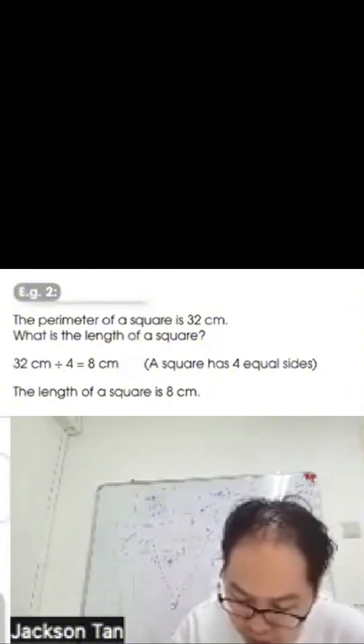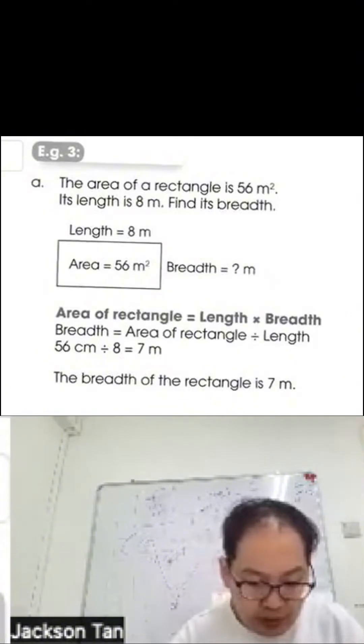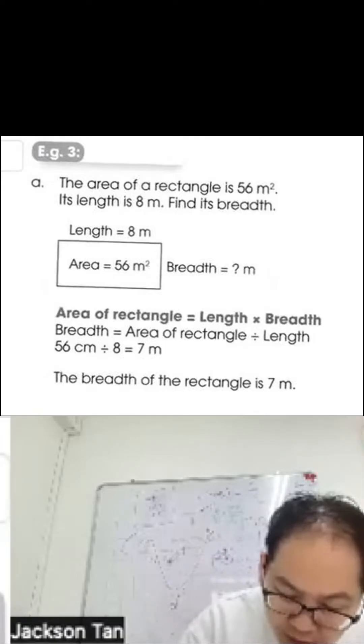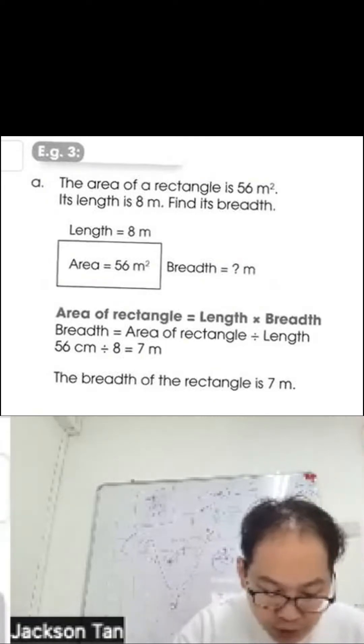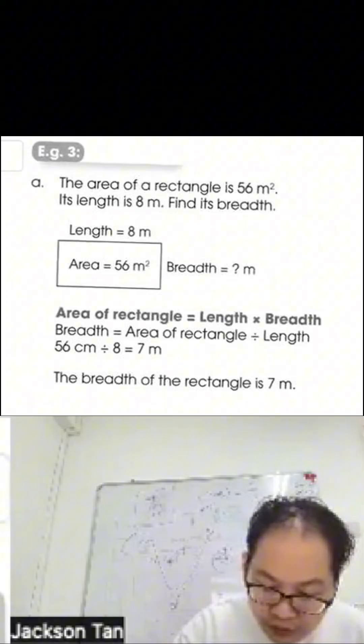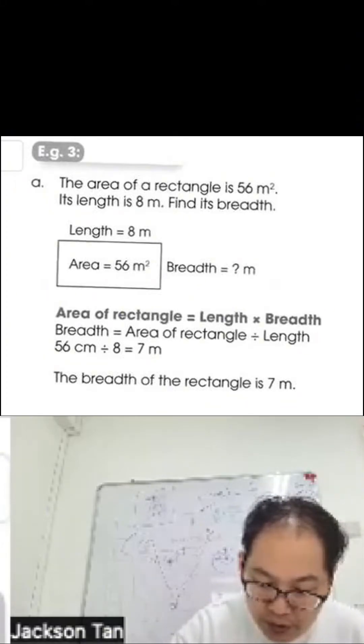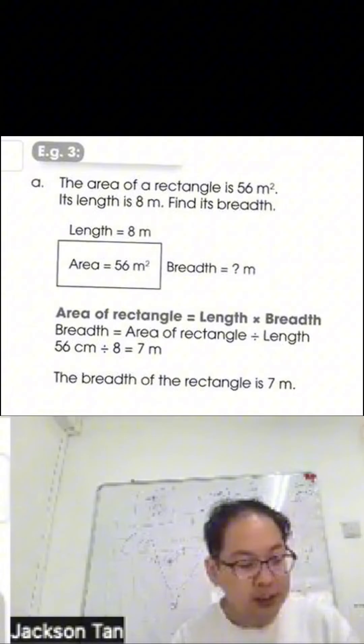Example 3: The area of a rectangle is 56 square meters and the length is 8 meters. Find the breadth. The area of a rectangle is length times breadth, so to find the breadth you take the area, 56, divided by the length, 8, which gives you 7 meters.